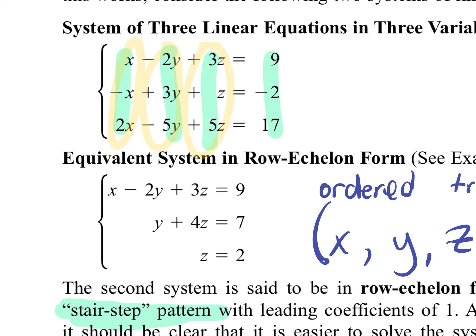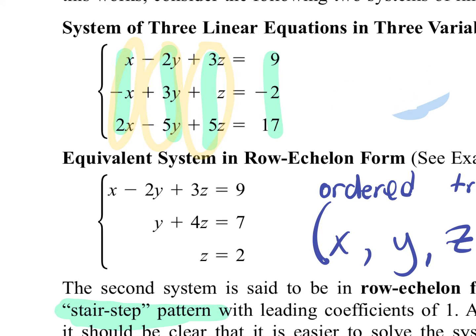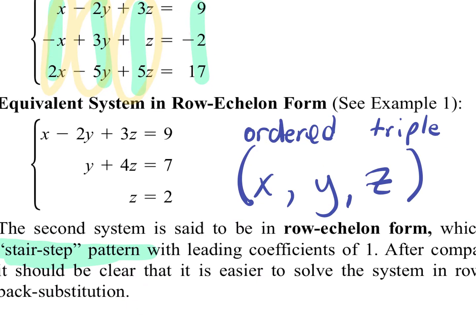When you write your answer — when we had an x and a y value, we wrote our answer as an ordered pair: x comma y. Now we're going to have three variables, so we'll have our answer written as what's called an ordered triple. You have your x value, your y value, your z value.